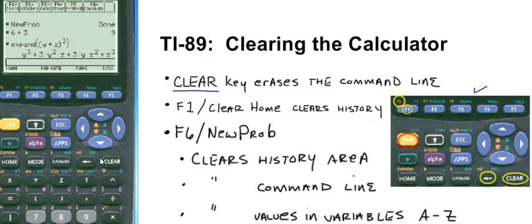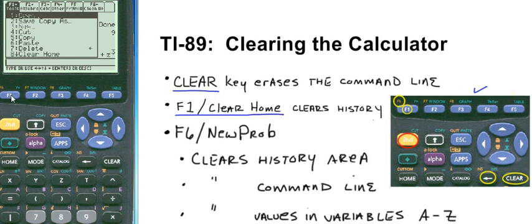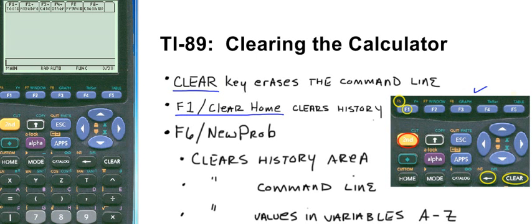Now let's clear the history area. To do that, punch F1 followed by clear home. So F1, clear home. We can scroll down to that, or it's easier to just punch 8, which I do so here. And now the history area is gone.